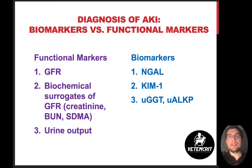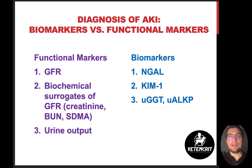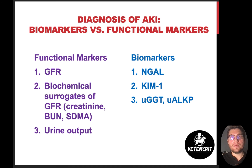Now let's shift to the diagnosis of AKI. Most of you have heard the terms biomarker and functional marker. When we talk about kidneys, the gold standard functional test is GFR, or glomerular filtration rate. The problem is GFR is hard to measure — it's not very convenient, it's time-consuming and laborious. Creatinine, BUN, and SDMA are examples of biochemical surrogates of GFR; in other words, they attempt to evaluate GFR non-invasively at the bedside. Urine output can also be used to assess renal function, but it's also far from perfect.